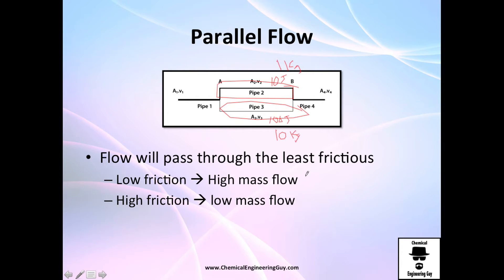If you have low friction, you're going to have high mass flow. If you have high friction, you're going to have low mass flow. High friction means low mass, and low friction means many materials can flow through.